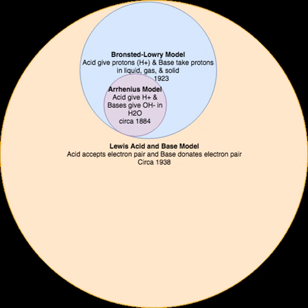Water is amphoteric—that is, it can act as both an acid and a base. The Bronsted-Lowry model explains this, showing the dissociation of water into low concentrations of hydronium and hydroxide ions: H2O + H2O → H3O+ + OH−. Here, one molecule of water acts as an acid, donating an H+ and forming the conjugate base OH−, and a second molecule of water acts as a base, accepting the H+ ion and forming the conjugate acid H3O+.